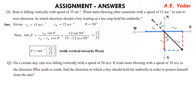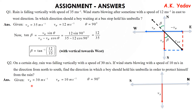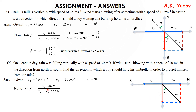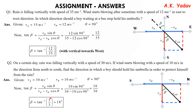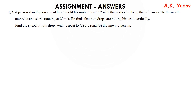Assignment Q2: On a certain rainy day, rain was falling vertically with a speed of 30 m/s. Wind starts blowing with a speed of 10 m/s from north to south. Find the direction in which a boy should hold his umbrella to protect himself. Representing it in the same manner as the previous question, with vrw making an angle beta with vr: tan β = vw·sinθ / (vr − vw·cosθ). Putting in values: β = tan⁻¹(1/3) = 18° with the vertical towards south — that is the angle.